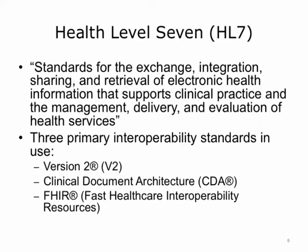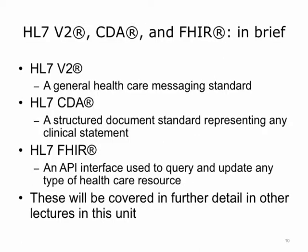Health Level 7, or HL7, has created three general-purpose standards for interoperability in the space of healthcare content standards. The three primary interoperability standards in use for Health Level 7 are Version 2, CDA or Clinical Document Architecture, and FHIR or Fast Health Interoperability Resources. HL7 Version 2 provides a way of communicating all different types of healthcare information via formatted messages. CDA is a structured document standard representing any clinical statement and meant to represent documents in healthcare. FHIR is an application programming interface, or API, used to query and update various types of healthcare resources. Due to the prevalence of these three standards, they will be covered further in other lectures in this unit.